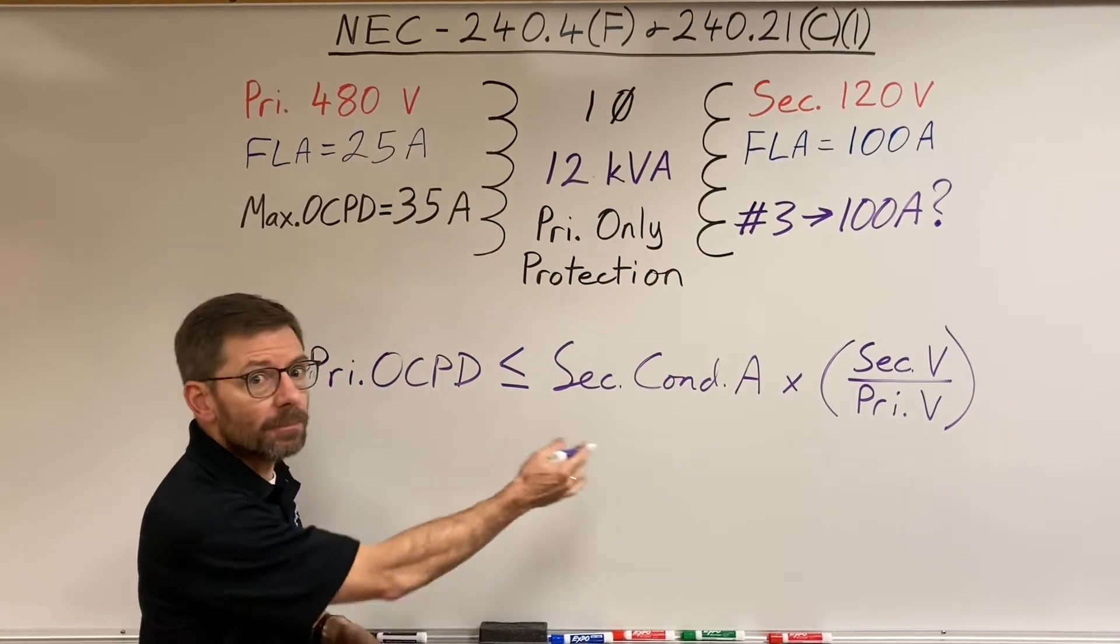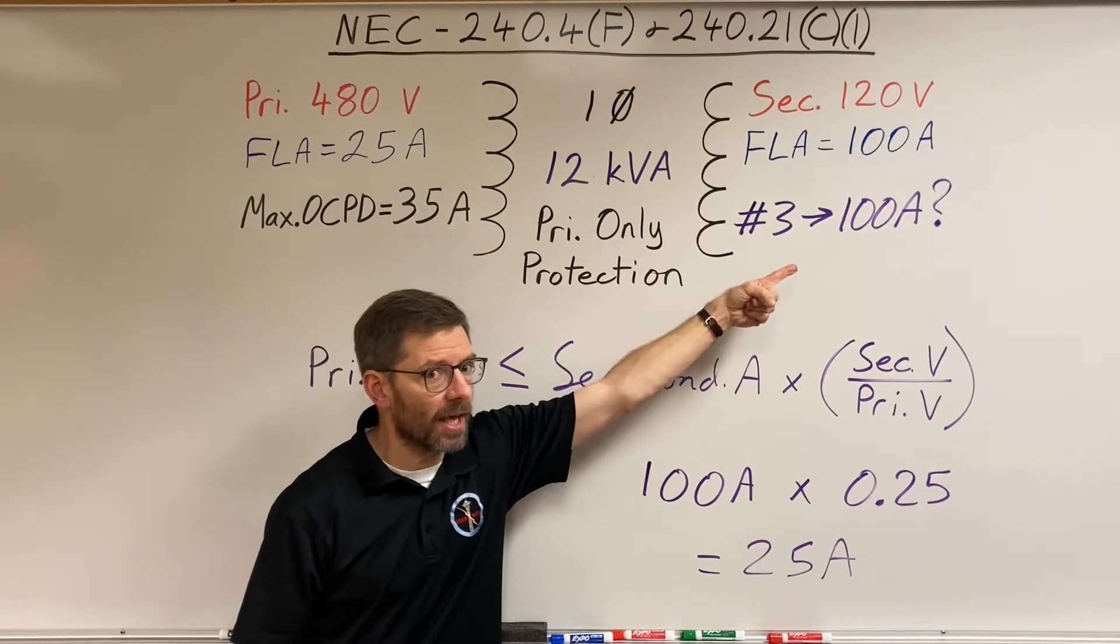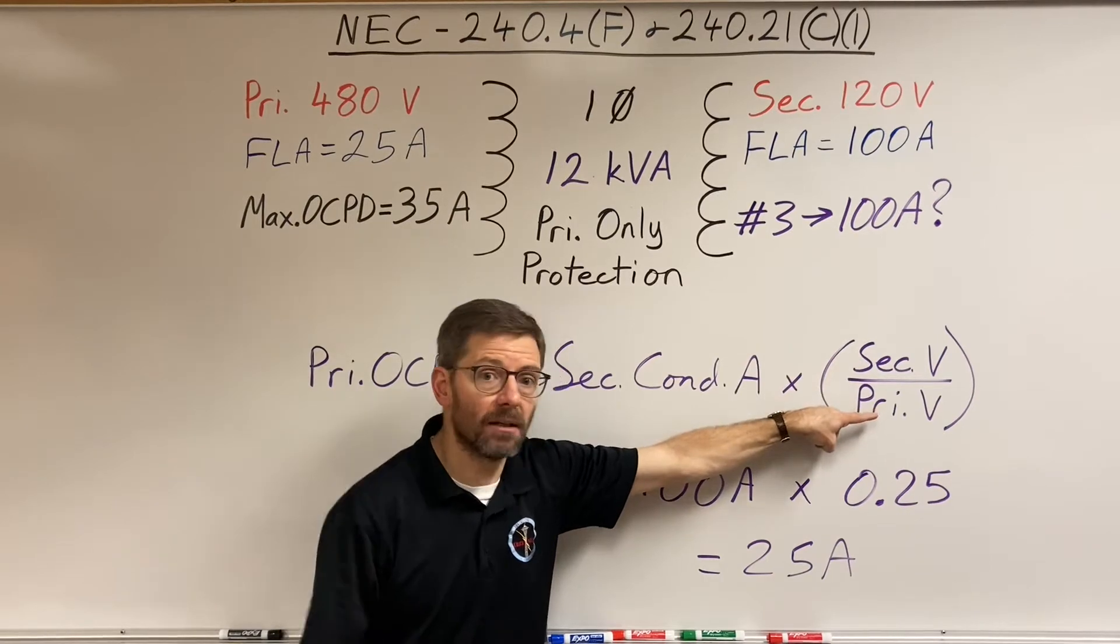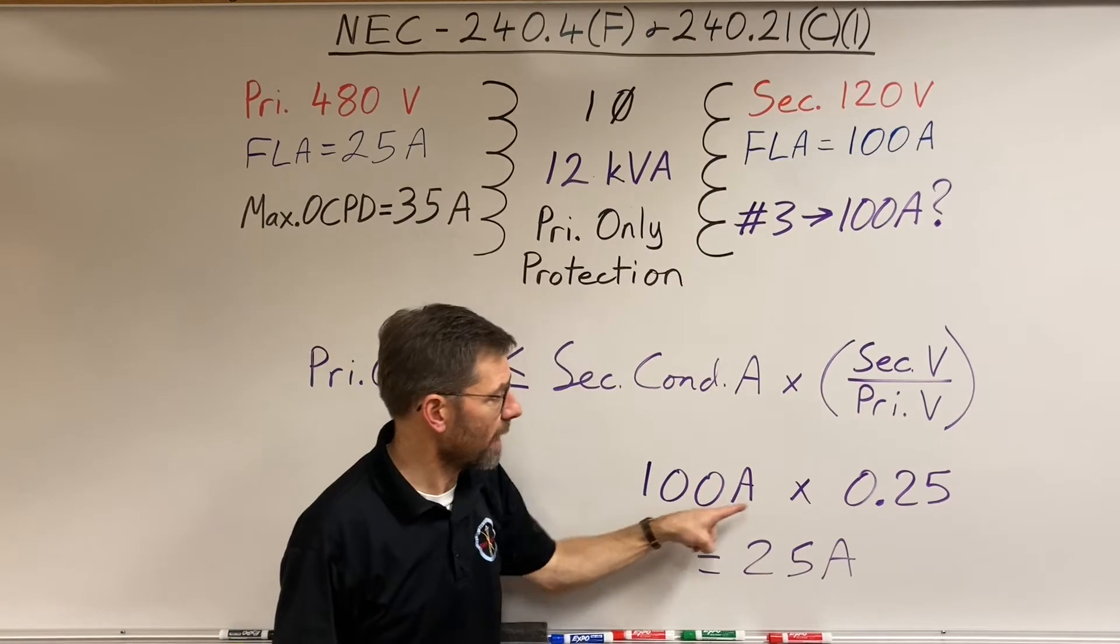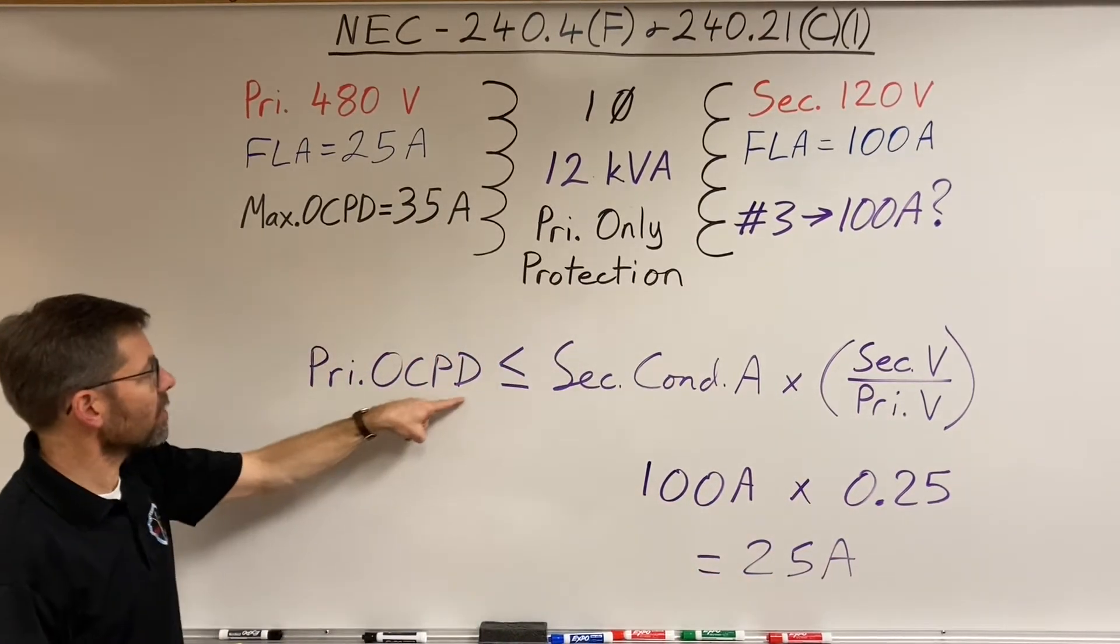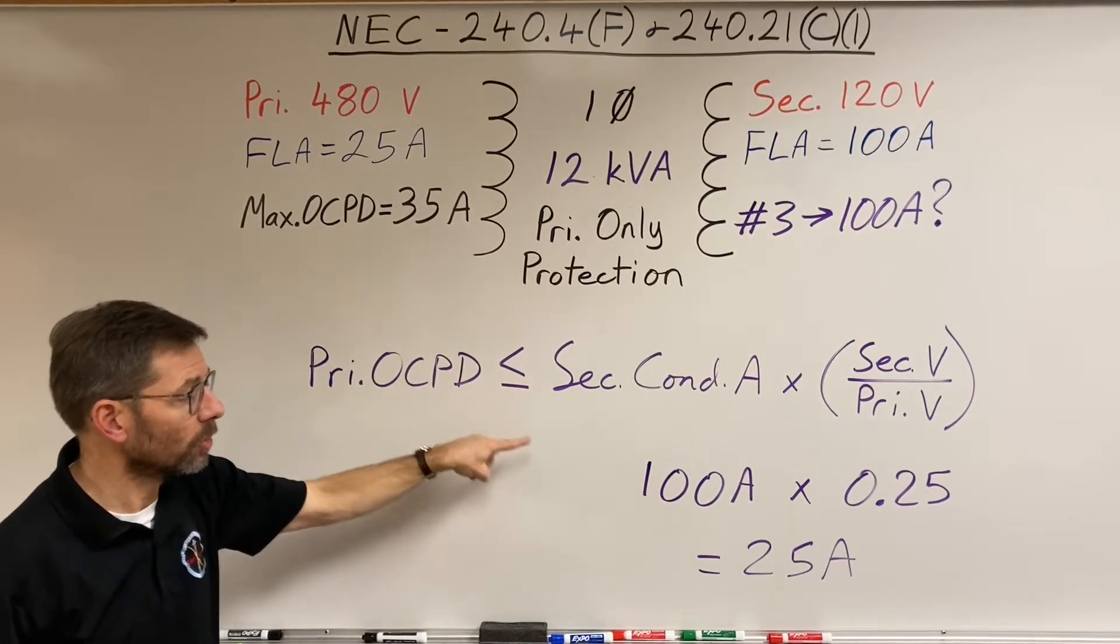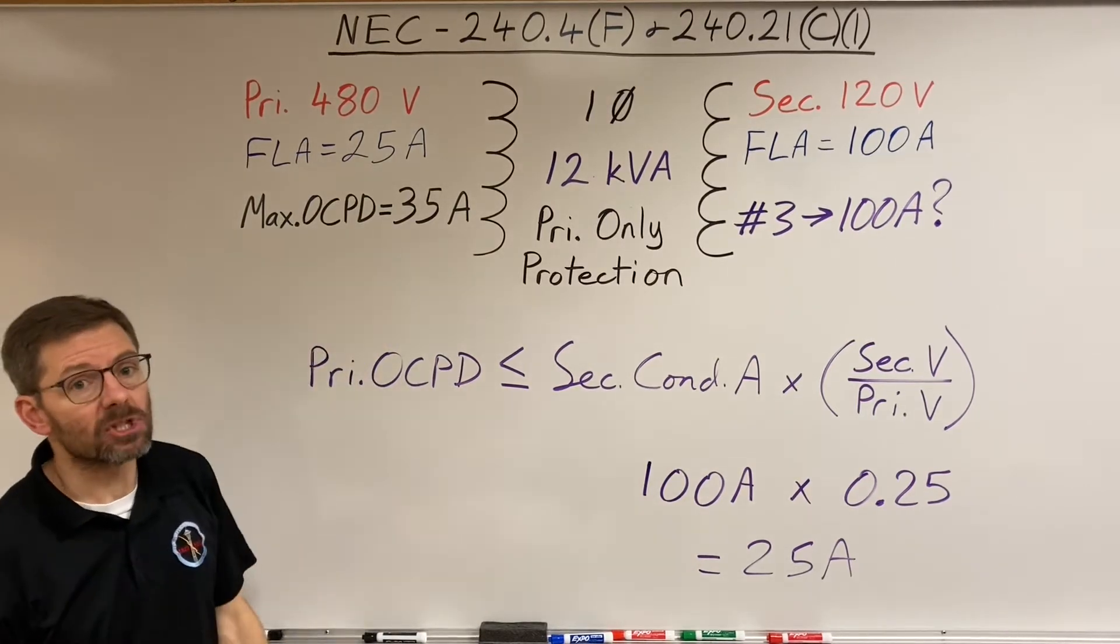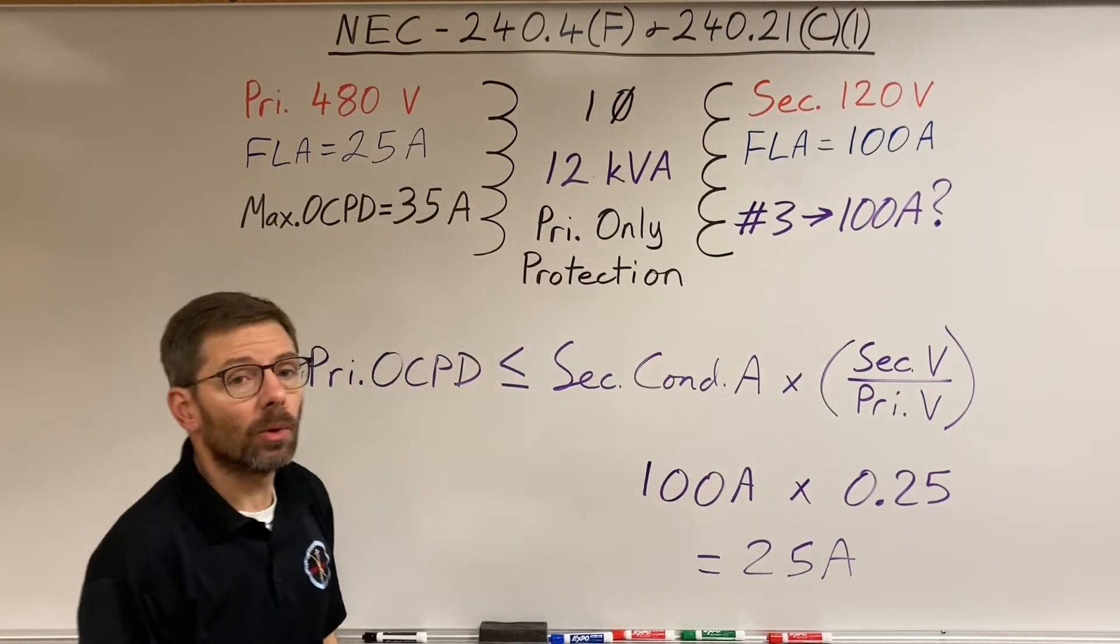My secondary conductor ampacity is 100 amps. The ratio is 120 divided by 480, so that's a quarter. 100 amps times a quarter is 25 amps. It's saying that this primary overcurrent protective device has to be less than or equal to 25 amps. Now 35 amps is more. That's if I want to use a number three. So that's not going to work.